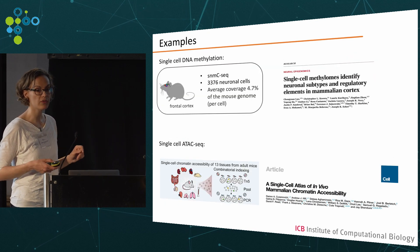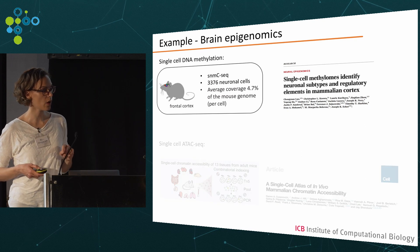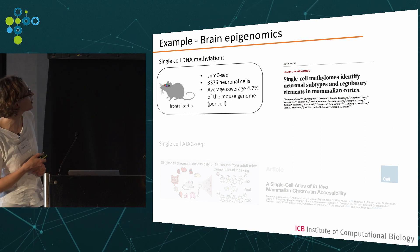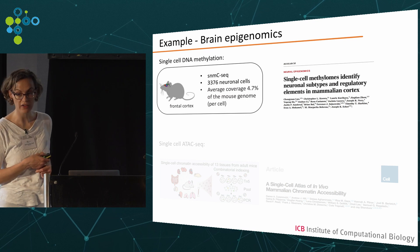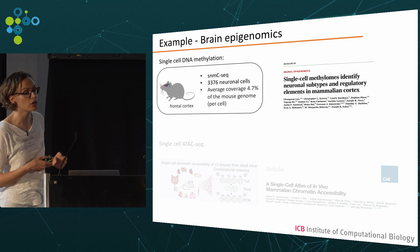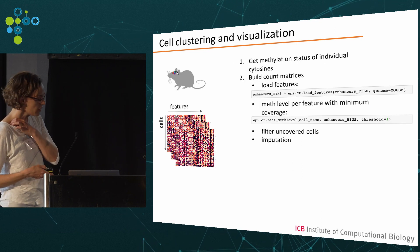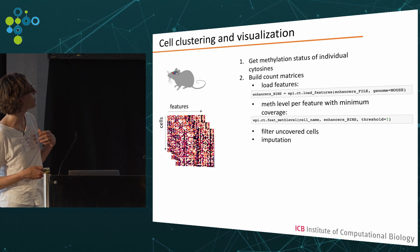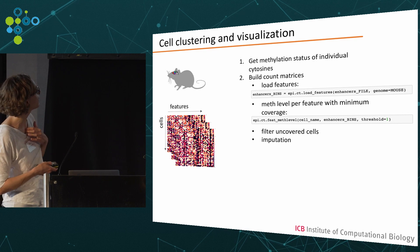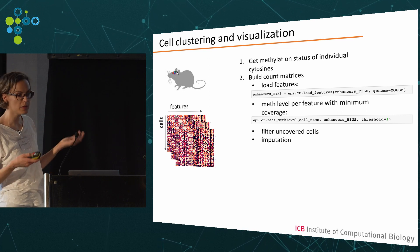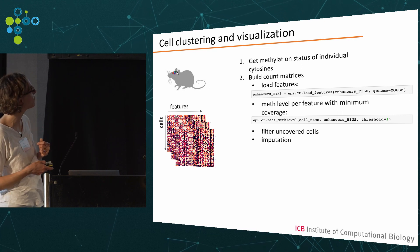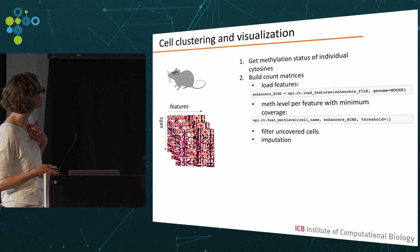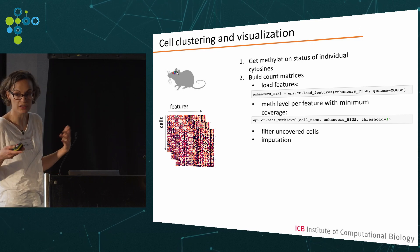I will show two different examples: one for DNA methylation and one for single cell ATAC-seq. For the DNA methylation example, we got data from Joe Ecker's group, who published one of the biggest single cell DNA methylation studies, profiling more than 3,000 neurons at very low coverage — less than 5% of the genome covered per cell. We first get the individual methylation status per cytosine, then build count matrices by loading features of interest — in this case enhancers — and calculate the average methylation level per feature with minimum coverage. We can also filter cells, do imputation, and calculate as many count matrices as features we are interested in.